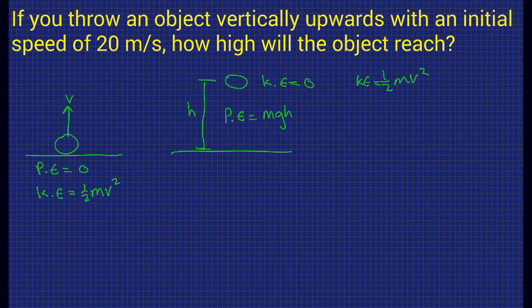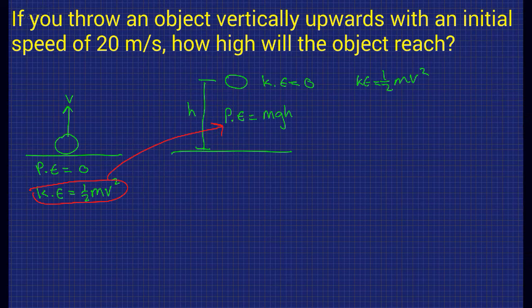As the ball goes from my hand to the top of its path, energy is being transferred from kinetic energy into potential energy. At the bottom it has no potential energy and all its energy is kinetic, but at the top there's no kinetic energy and all the energy is potential. So let's set these two things equal to each other.